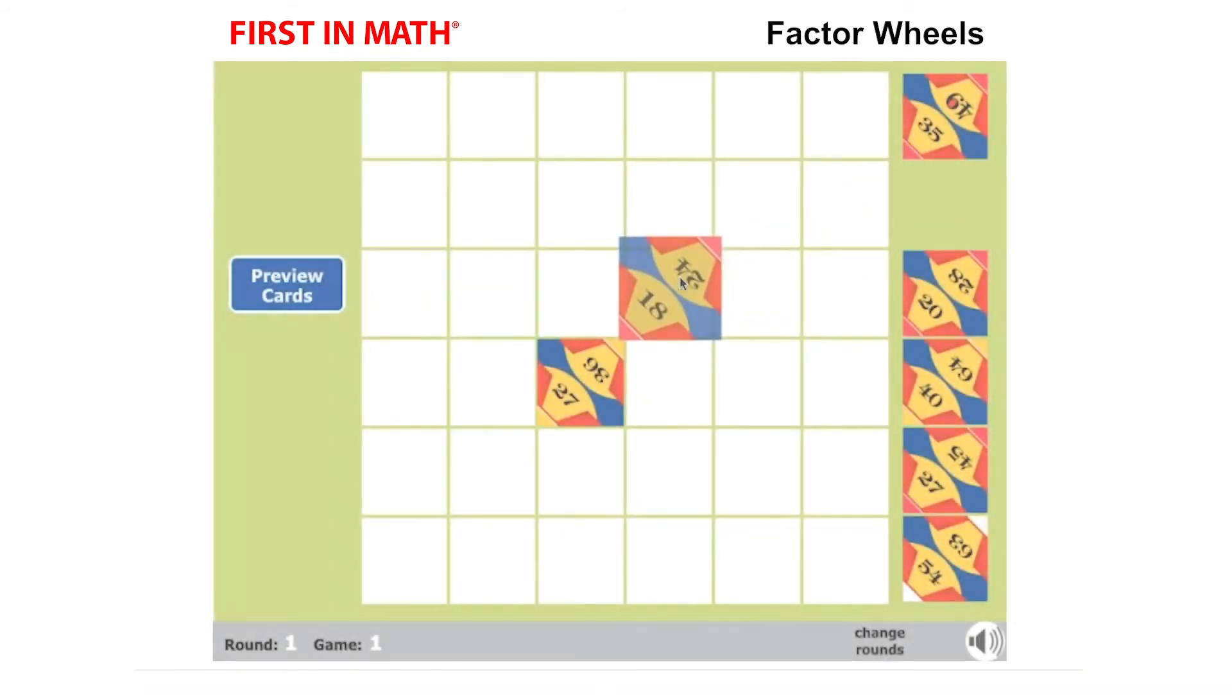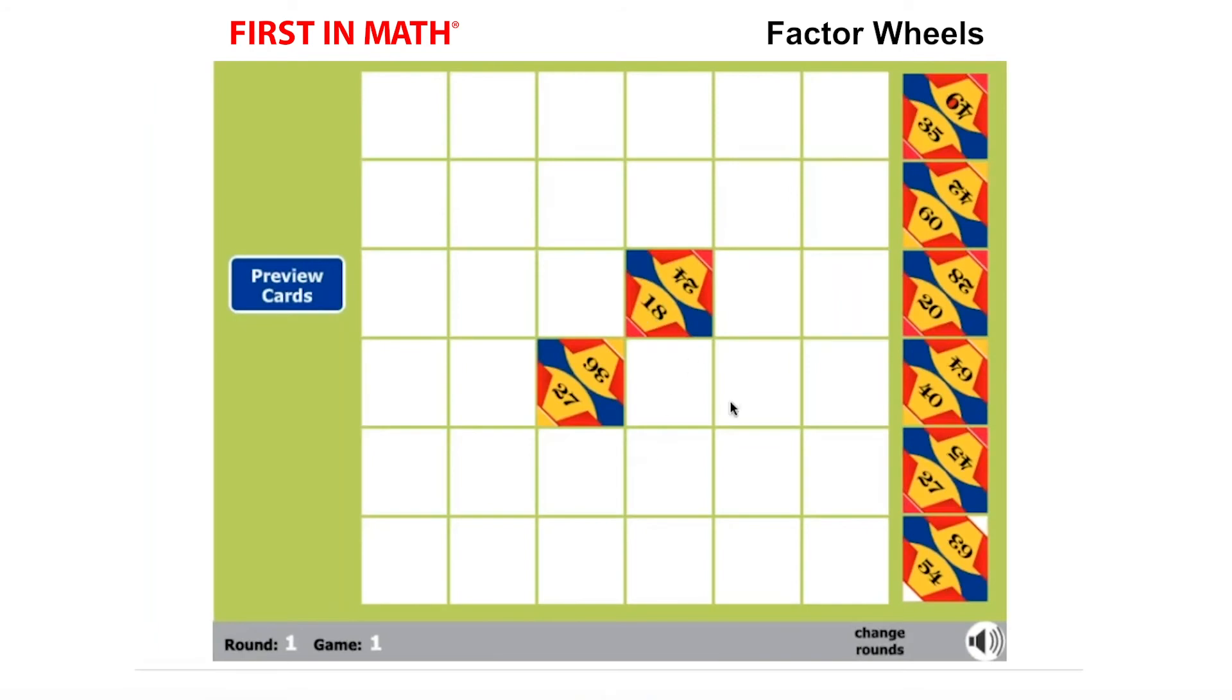Knowing this, search your deck for other cards that have a factor of 6 and add it to the wheel. Click the piece to rotate it if needed and find two more cards to complete the wheel.